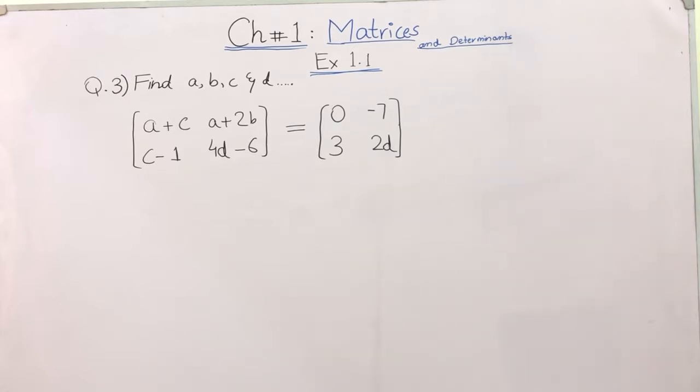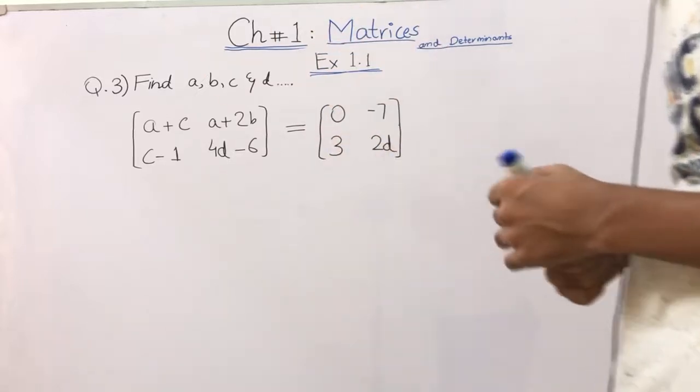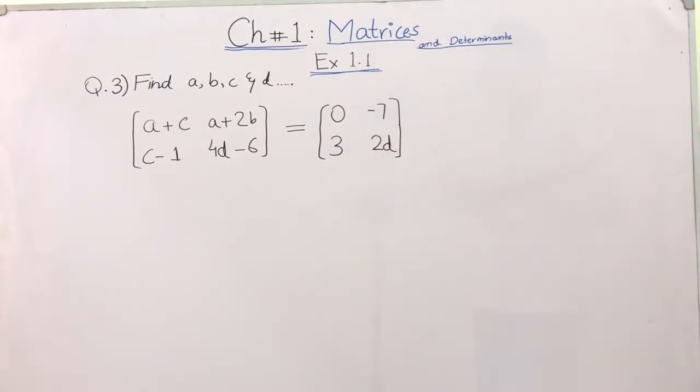We will use the concept of equal matrices. In equal matrices, there were two conditions for equality of matrices. One was that the two matrices should be equal in order, and the corresponding entries should coincide.